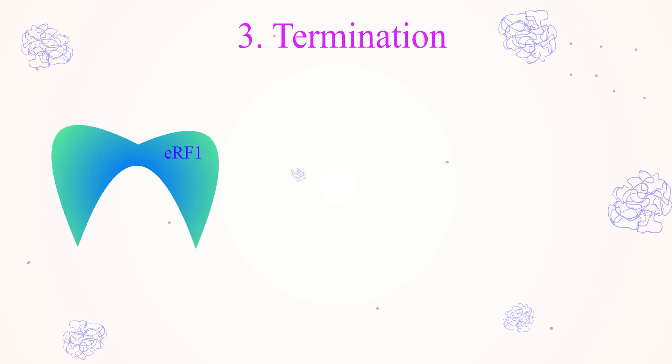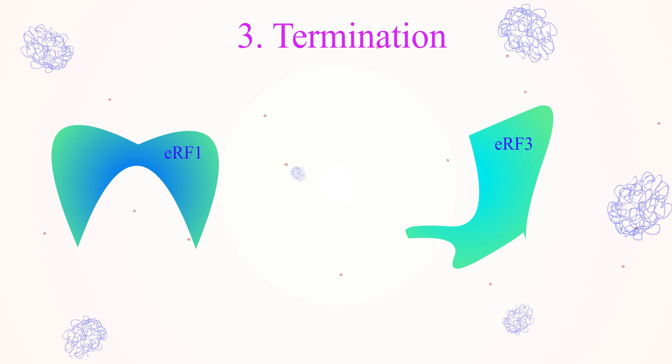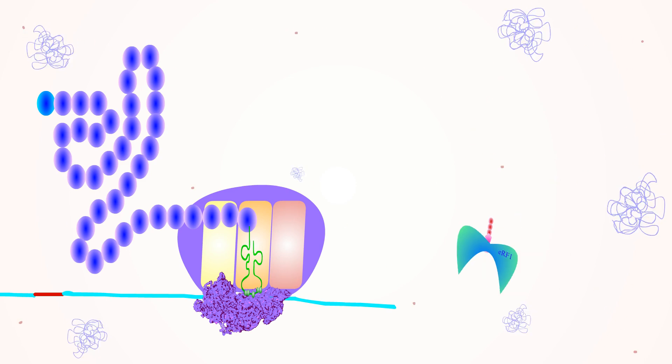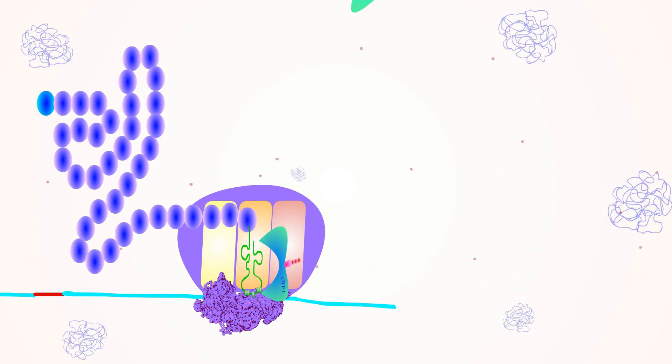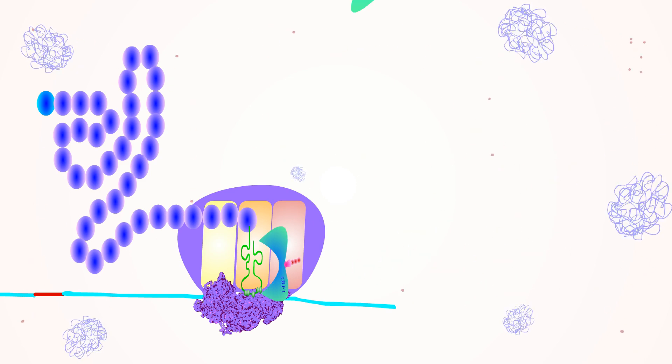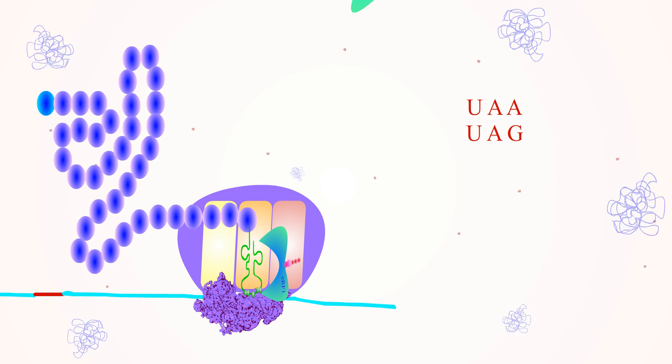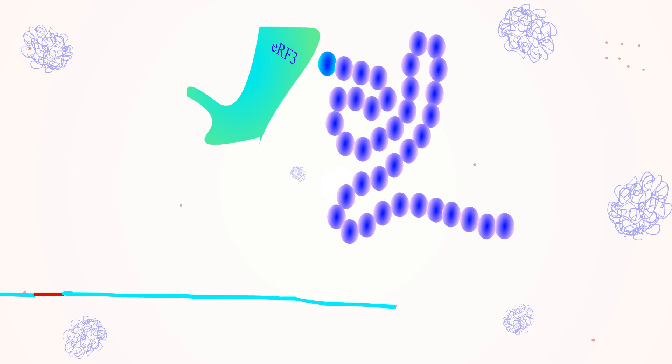Stage 3. Termination. Similar to prokaryotes, the termination in eukaryotes is carried out with the help of eukaryotic release factors ERF1 and ERF3. The eukaryotic release factor 1, with the help of GTP, can recognize all three termination codons UAA, UAG, and UGA that are seen in eukaryotes. The eukaryotic release factor 3 will help in the termination.